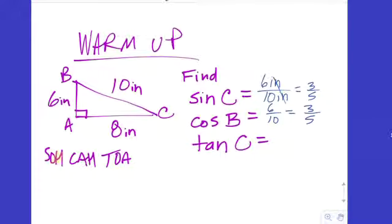Sin is short for sine, and cos is short for cosine. Maybe you've wondered why we reuse the same word with just a prefix of 'co'. Let's talk about that a little bit.